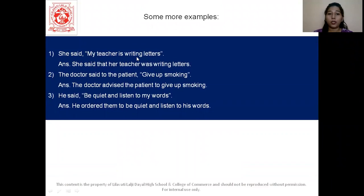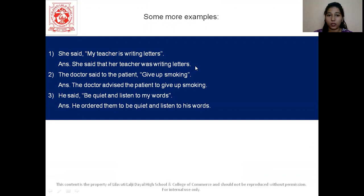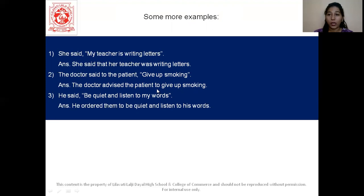Let us see some examples. 'She said my teacher is writing letters.' The reported verb is in the past tense, so the tense of the reported speech will also change — 'is writing' becomes 'was writing.' So it becomes 'she said that her teacher was writing letters.' Next: 'The doctor said to the patient, give up smoking.' This is an advice, so we use the word 'advised' rather than 'said.' The doctor advised the patient to give up smoking — we use 'to' here, not 'that.'